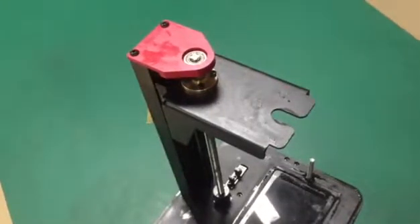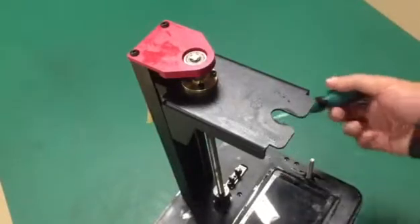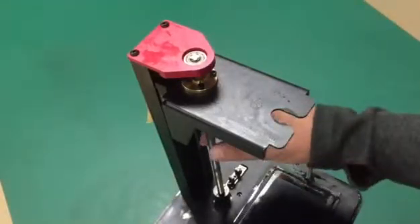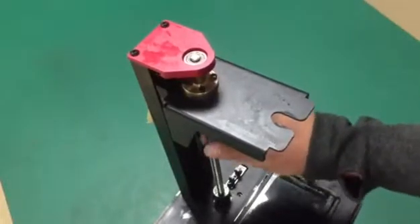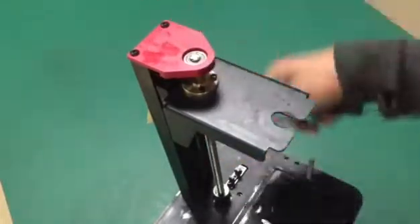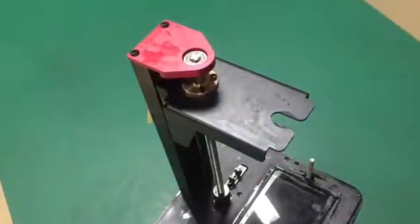In case you receive your Duplicator 7 and for whatever reason you found your Z-lead screw is bent, this video shows you how to disassemble this part and replace the new Z-lead screw when you receive it.